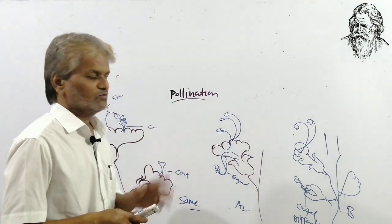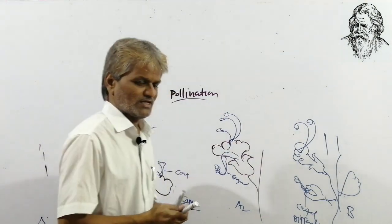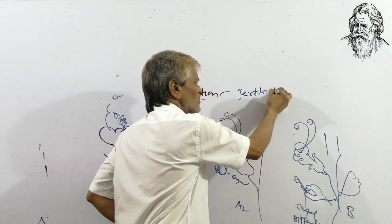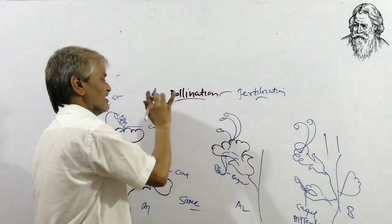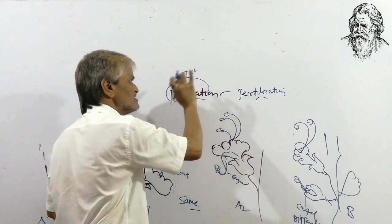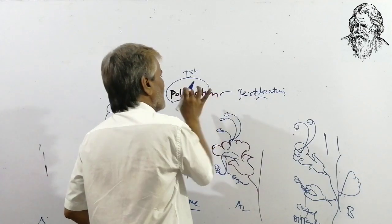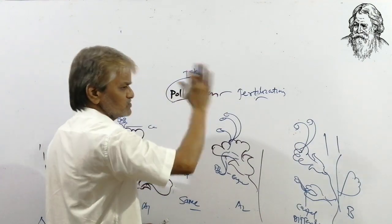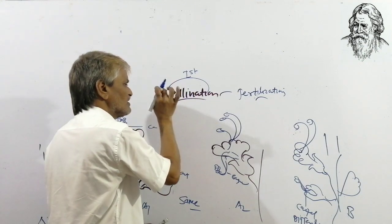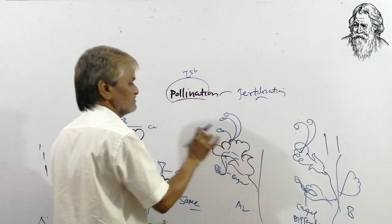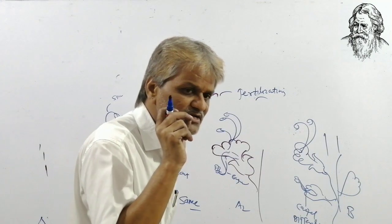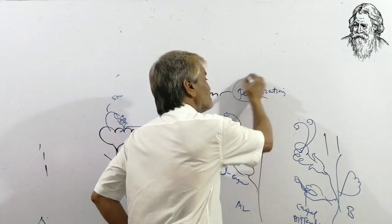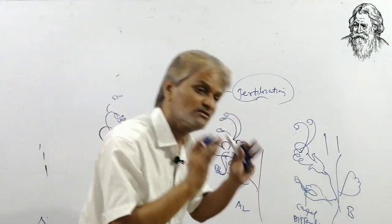Pollination is a term related to the process of formation of fruits as well as seeds. Pollination is the process that takes place before fertilization. It is the first process which is necessary for the process of fertilization. Pollination is a necessary pre-requisite before fertilization.